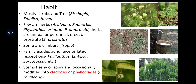Habit: mostly shrubs and trees — Bischofia, Emblica and Hevea are trees. Few are herbs like Acalypha, Euphorbia, Phyllanthus, Urinaria and Amara etc. Herbs are annual or perennial, erect or prostrate. Some are climbers like Tragia. The family exudes acrid juice or latex. Exceptions are Phyllanthus, Emblica and Sarcococca.